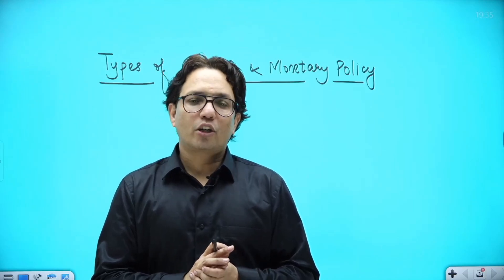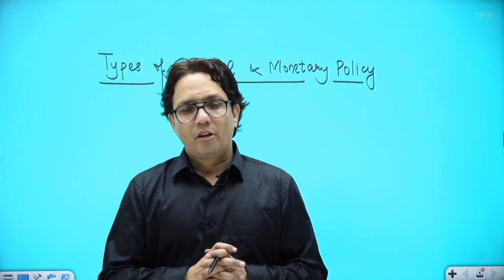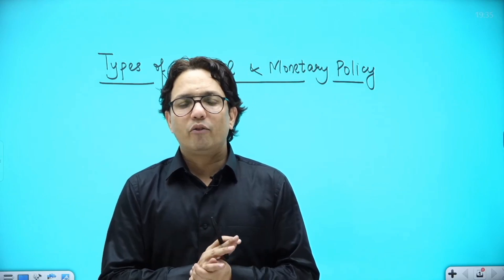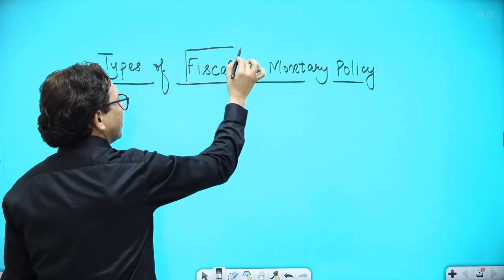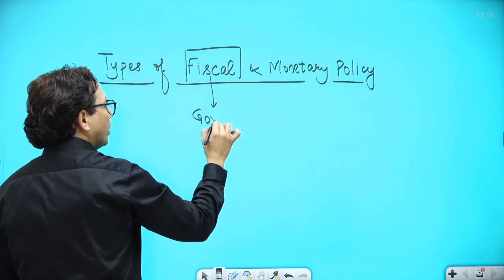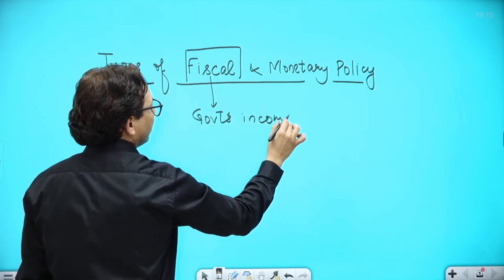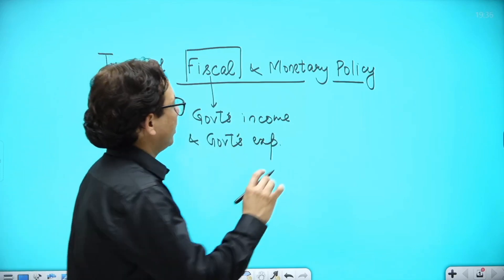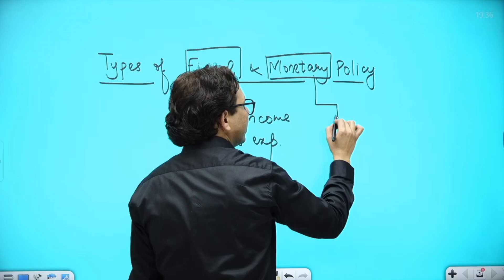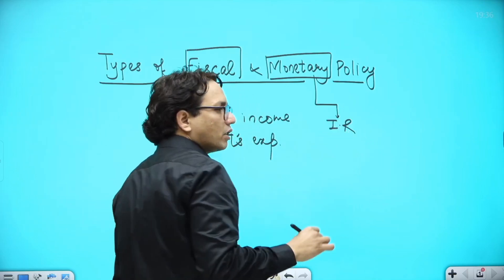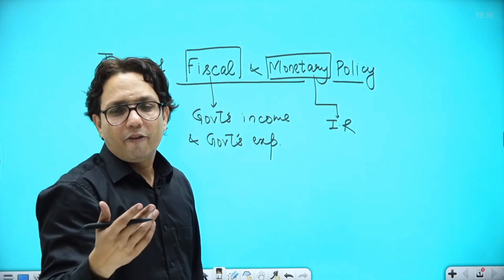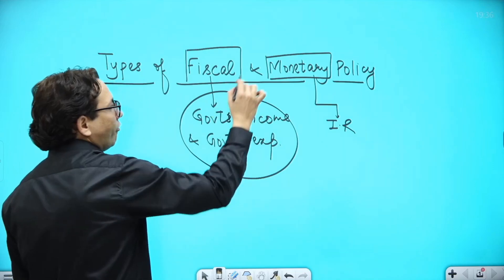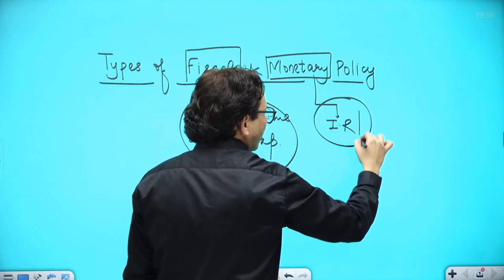Hello and welcome. Today we will be discussing the types of fiscal and monetary policy. Let me give you an overview. Fiscal policy deals only with government's income and government's expenditure. On the other hand, monetary policy deals with various interest rates and other instruments which the RBI uses to control inflation. In short, fiscal policy is related to the government, and monetary policy is related to interest rates or the RBI.